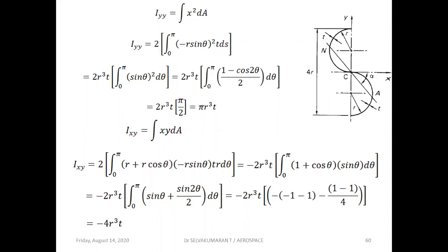Ixy equals the integral of x·y·dA. For the top section, x = −r·sinθ and y = r + r·cosθ; for the bottom section, y becomes negative and r·sinθ is positive. Evaluating these contributions and applying the limits gives Ixy = −4r³t.